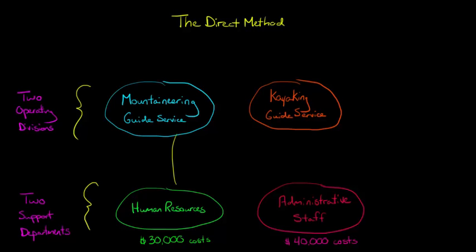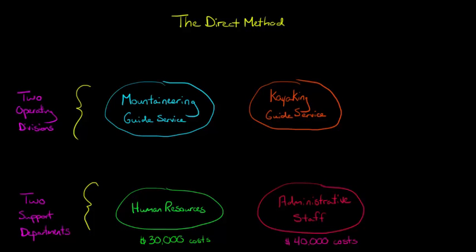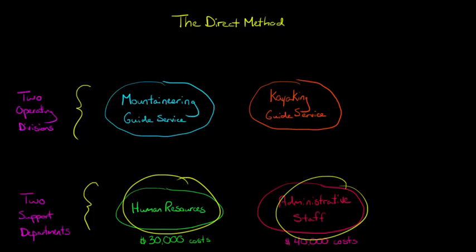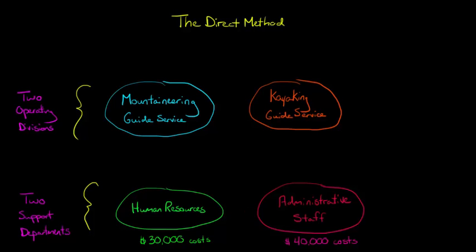These two support departments each provide services to each of our operating divisions. The administrative staff helps both the mountaineering and kayaking guide services, but these support departments also help each other. For example, the HR department might hire the office manager that works for the administrative staff. So now we have the question of how to allocate the costs of the HR department and the administrative staff — because there's interplay going on with two support departments that are also helping each other.